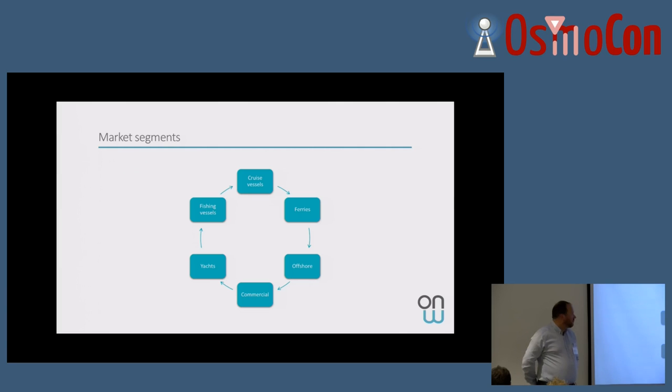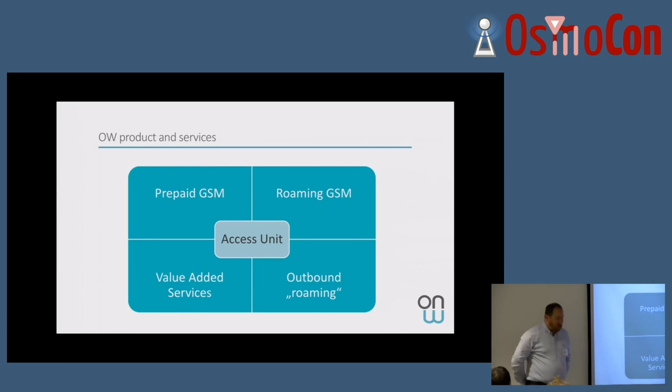So, market segments. We started with cruise vessels and ferries. Well, for one obvious reason, those were the larger kind of ships we could operate on. We moved to offshore, commercial, fishing, really everything which is floating. And every vessel which, of course, spends a little bit of time at sea. If the vessel spends 11 months in port, it's really not of interest for us. We were actually mostly an inbound roaming operator. We started without having zero customers. And we have started to develop a prepaid offer a few years ago.